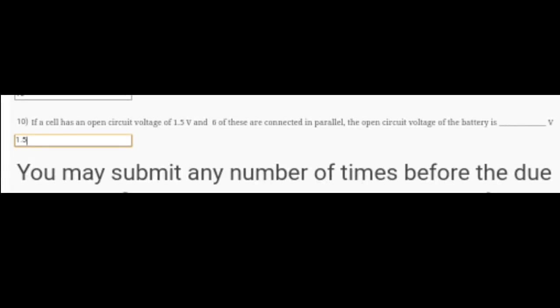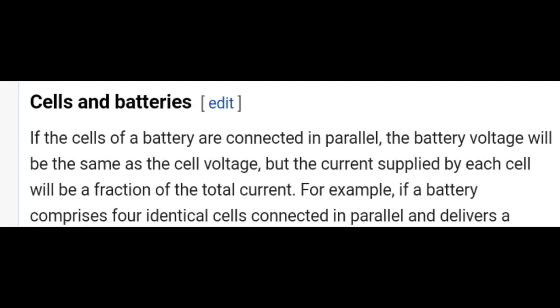Question 10: If a cell has an open-circuit voltage of 1.5 volts and 6 of these are connected in parallel, the open-circuit voltage of the battery is 1.5 volts. You can see from this picture - if cells of a battery are connected in parallel, the battery voltage will be the same as the cell voltage. So our answer is 1.5 volts.